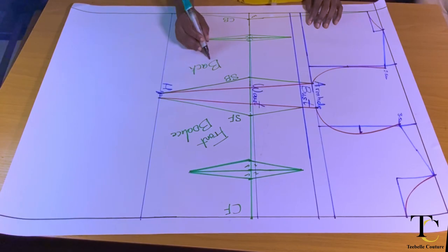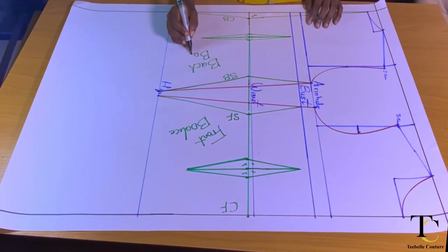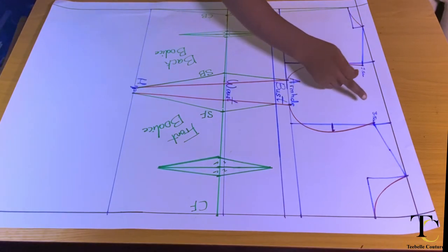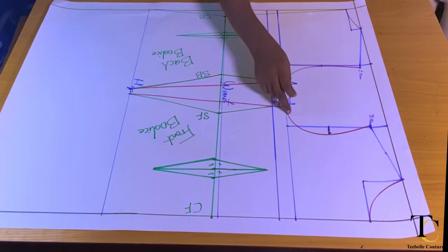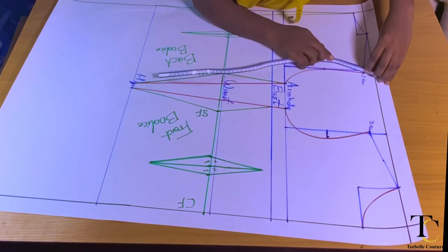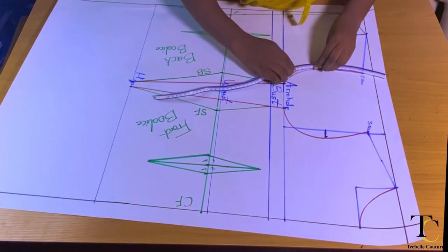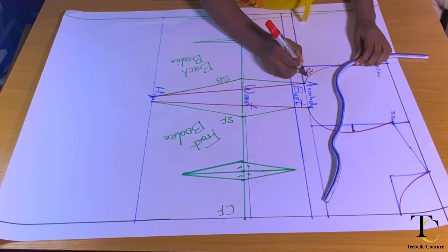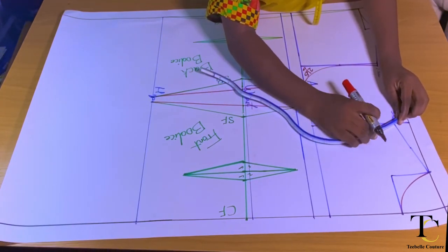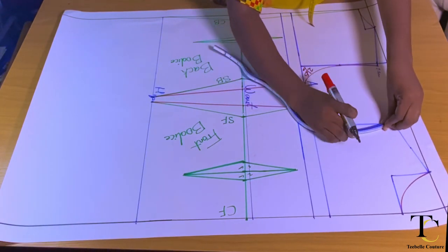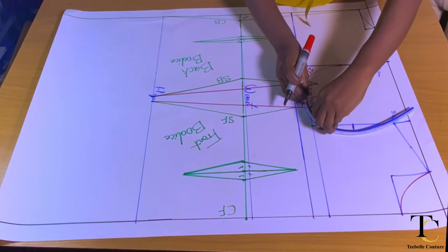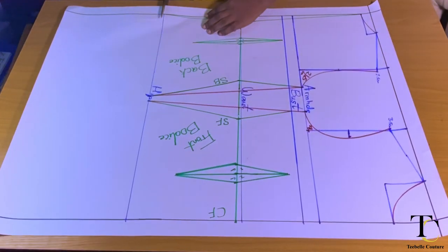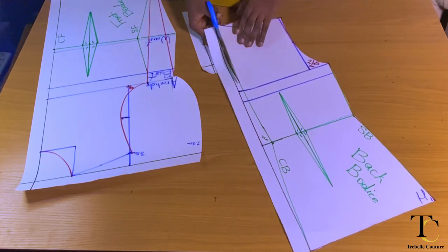So I have my center front, side front, side back, and center back — this is the front basic bodice and the back basic bodice. The next thing is to measure around my armhole because I'll be using it to draft my basic sleeve in my next video. I'm going to go around to measure what I have for both my front and my back armhole and note them down.